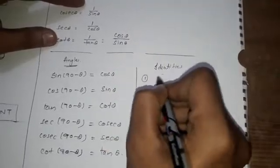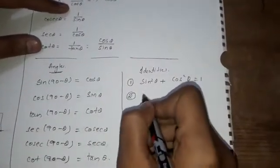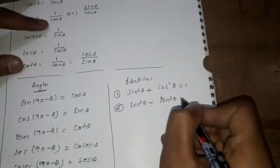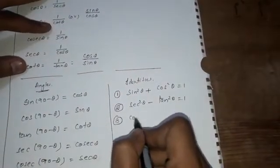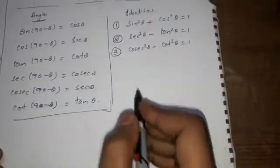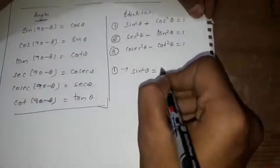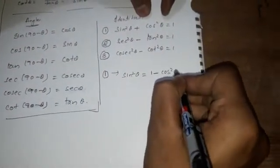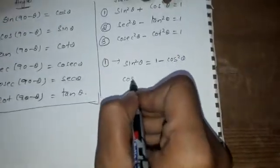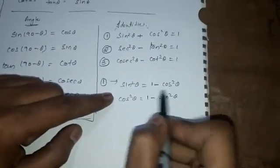Then we have three identities. The first identity is: sin²θ + cos²θ = 1. From this, sin²θ = 1 − cos²θ, and cos²θ = 1 − sin²θ. So if in any problem you encounter sin²θ, you can substitute it as 1 − cos²θ, and vice versa.